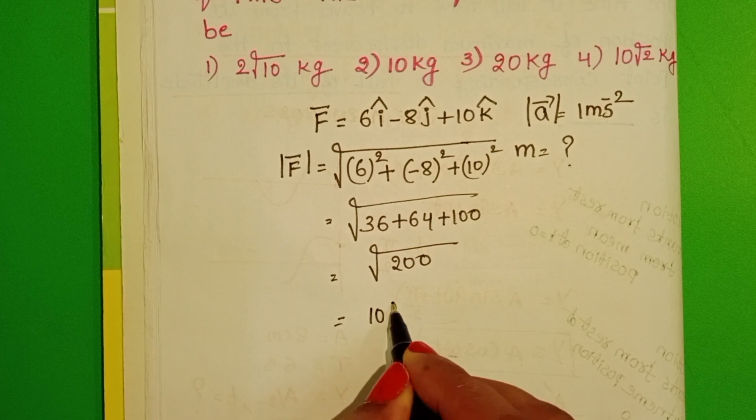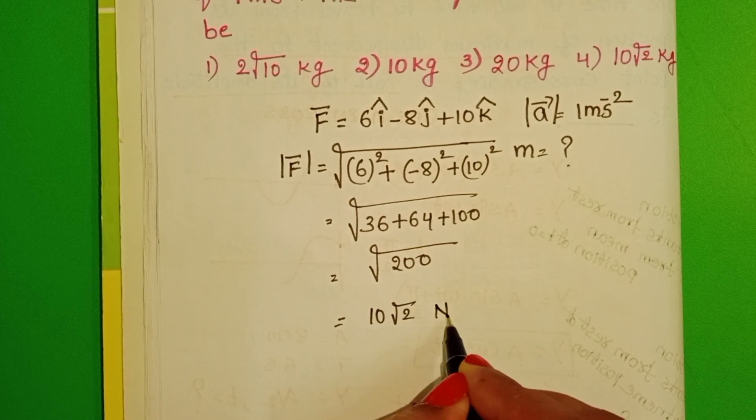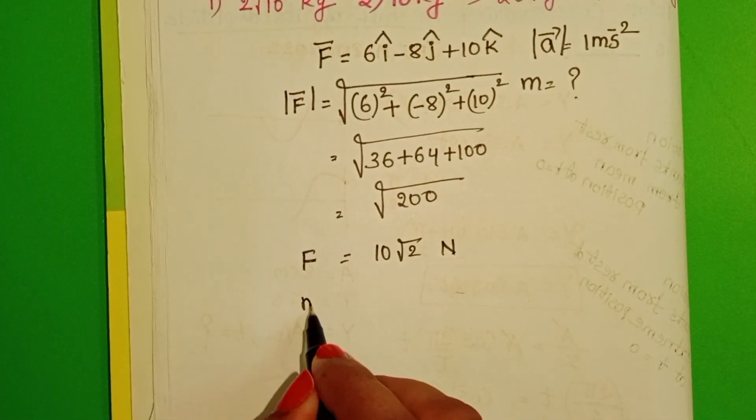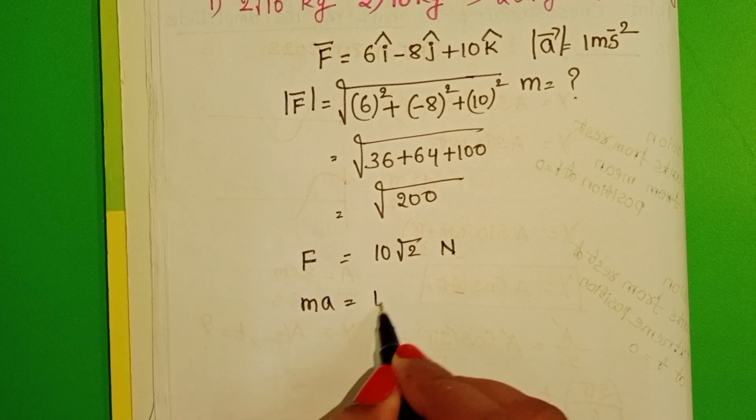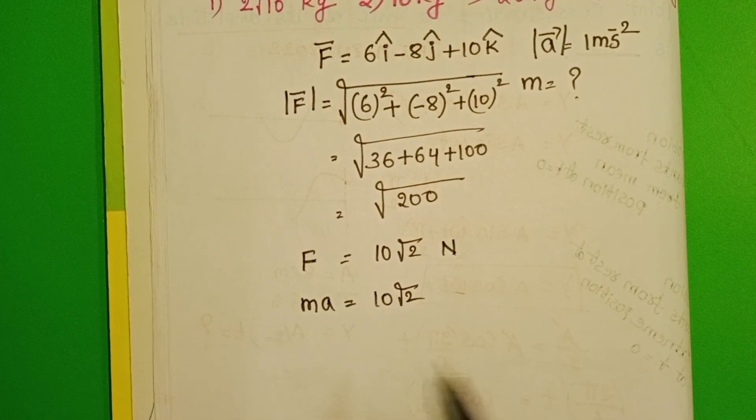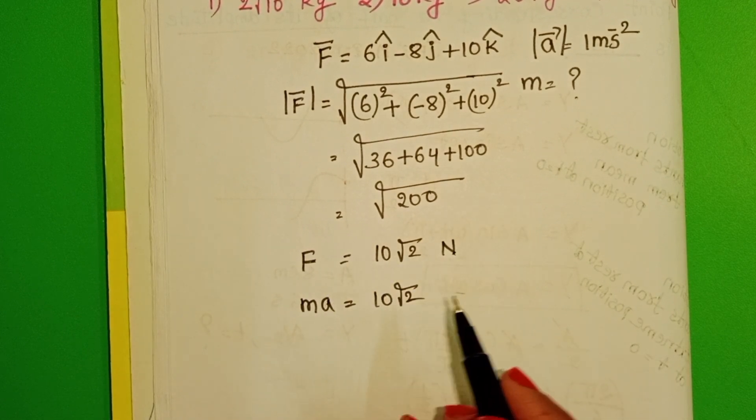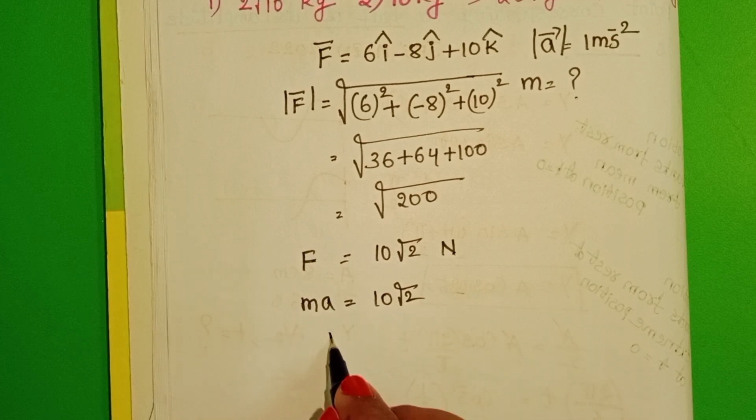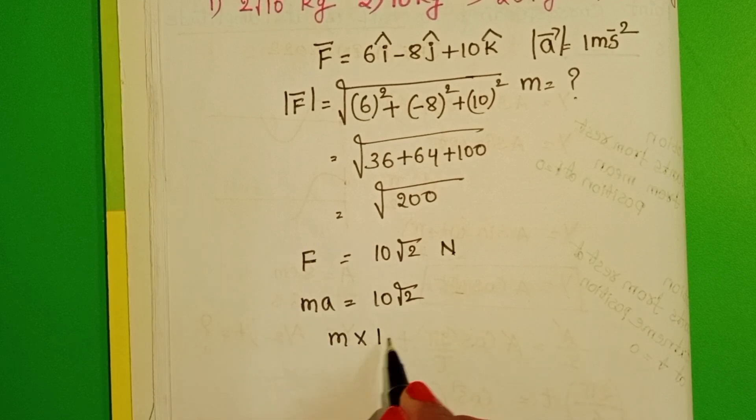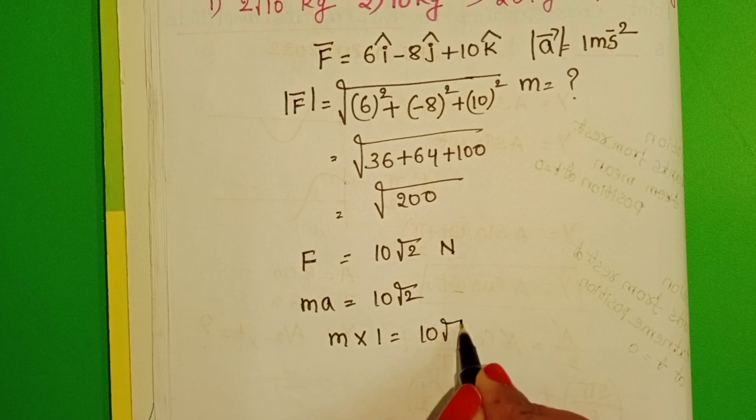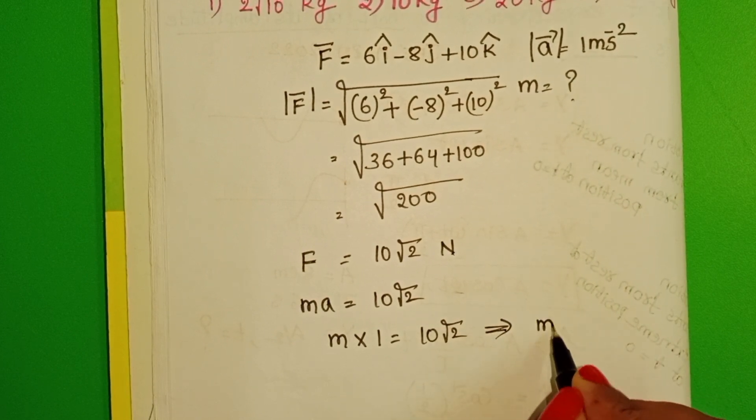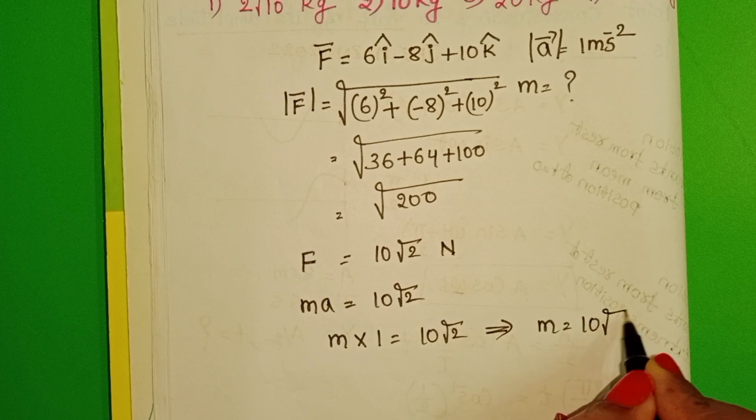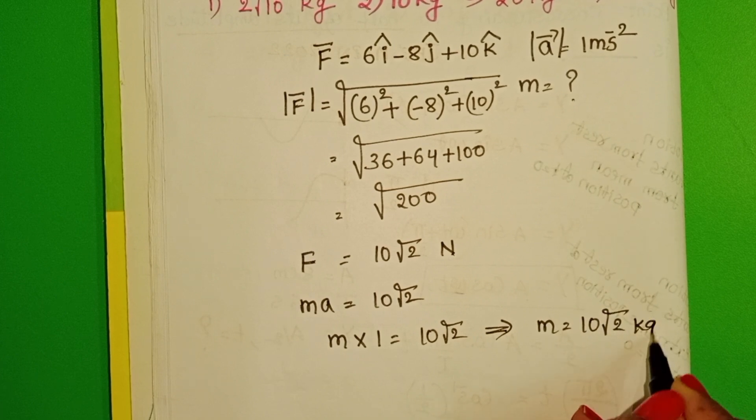10 root 2 newton. We know force equals mass into acceleration. Acceleration equals 1 meter per second square. M into 1 equals 10 root 2. So mass of the body equals 10 root 2 kg.